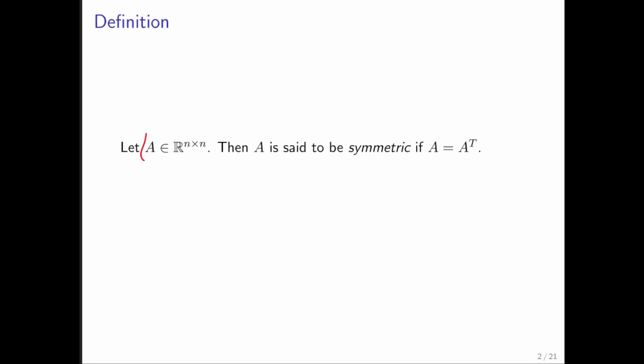First of all, symmetric matrices must be square. And the reason for this is that a matrix is symmetric if it's equal to its own transpose. Remember that if A is m by n, then its transpose is n by m. But if A is equal to A transpose, then m must be equal to n. And therefore, the notion of a matrix being symmetric only makes sense if A is square.